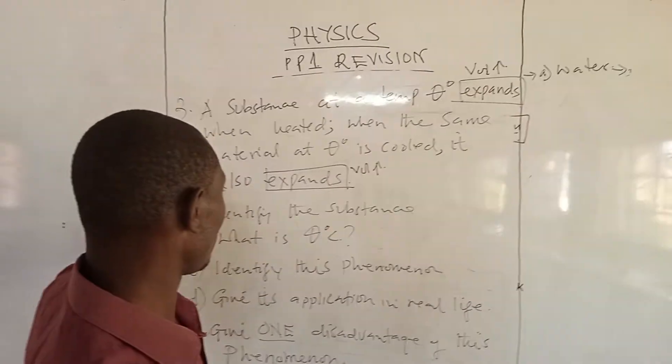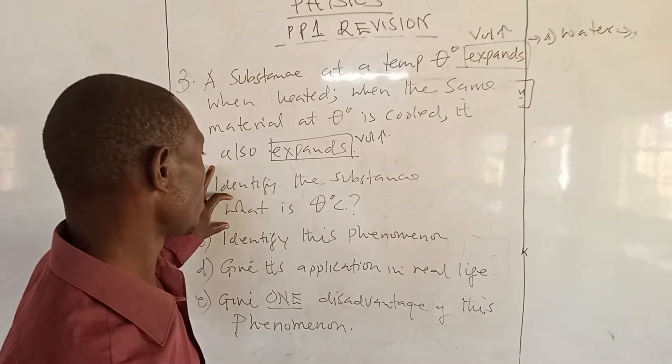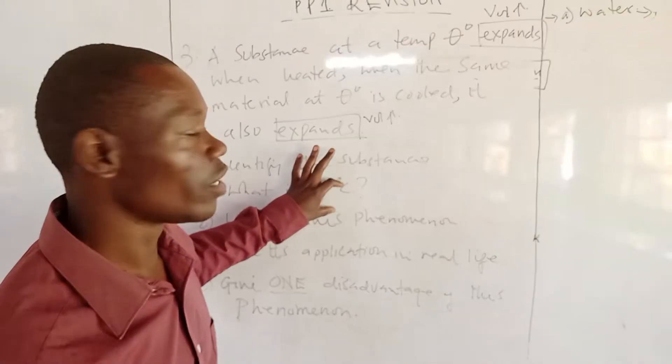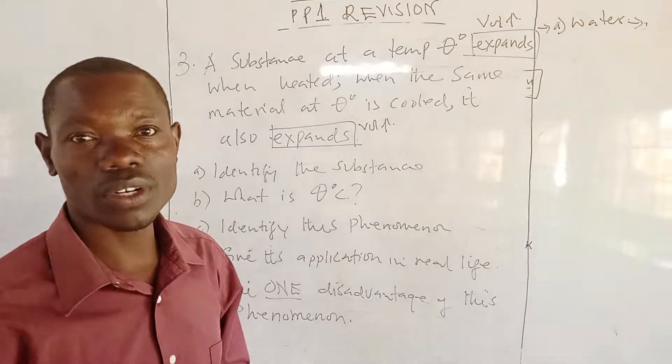Now, if I say the substance is water, I should also be able to say the value of this temperature theta. Normally, with reference to water, theta is always 4 degrees.